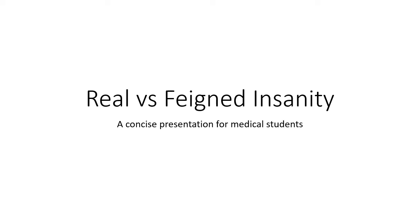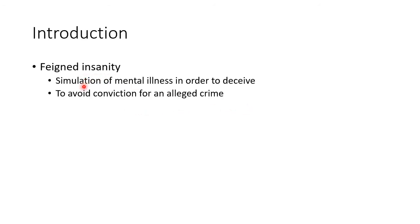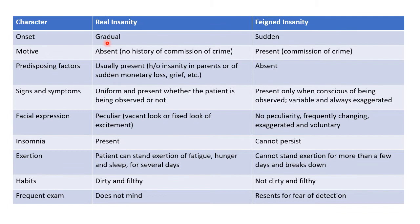Hello guys, this is Indian Medico. In this video we will see the differences between real and faint insanity. Faint insanity is the simulation of mental illness in order to deceive — that is, in faint insanity, a person acts as if they are insane, usually to avoid conviction for an alleged crime.